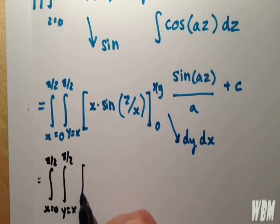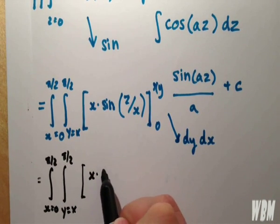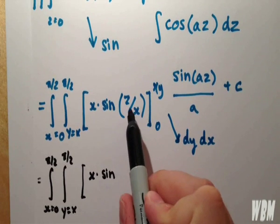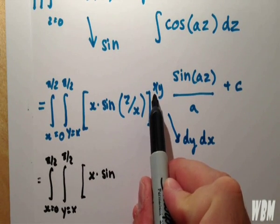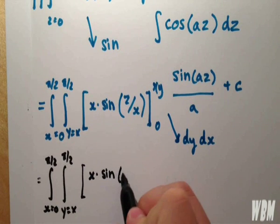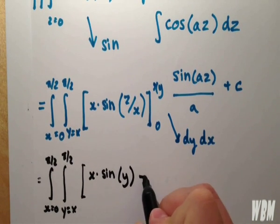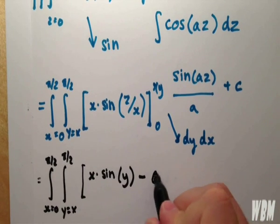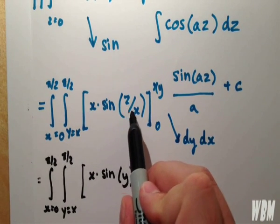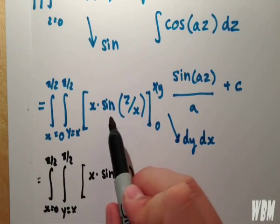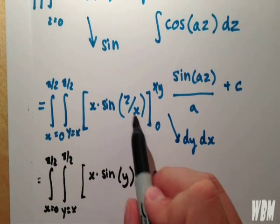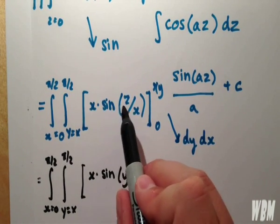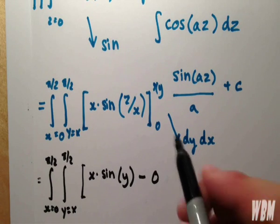If z becomes xy, the x's cancel, so we have y, minus, when z equals 0, anything multiplied by 0 becomes 0 itself.